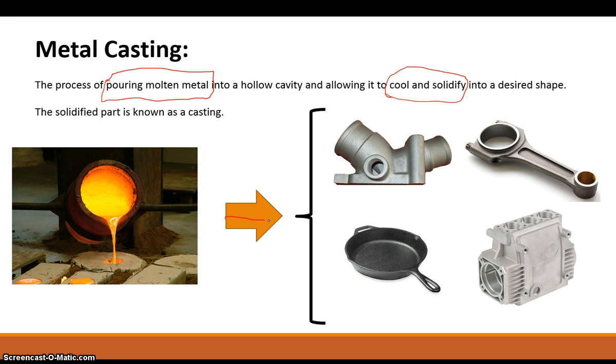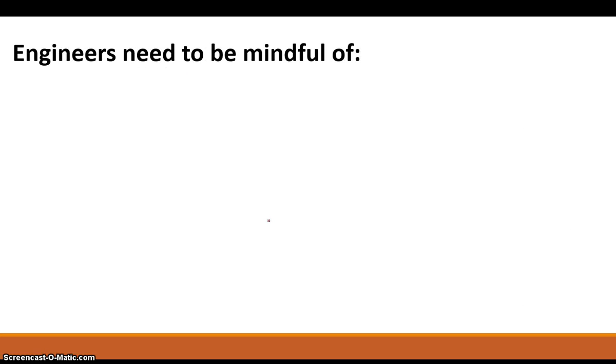It also plays into other aspects like shrinkage in the casting, because you have a device called a riser. One of the purposes of a riser is as a reservoir to help offset or help mitigate any type of shrinkage. So it's very important that you know how the riser is going to solidify, because you want that to solidify after all the other parts of the casting have solidified, because it needs to stay liquid so that you can actually use that molten metal.